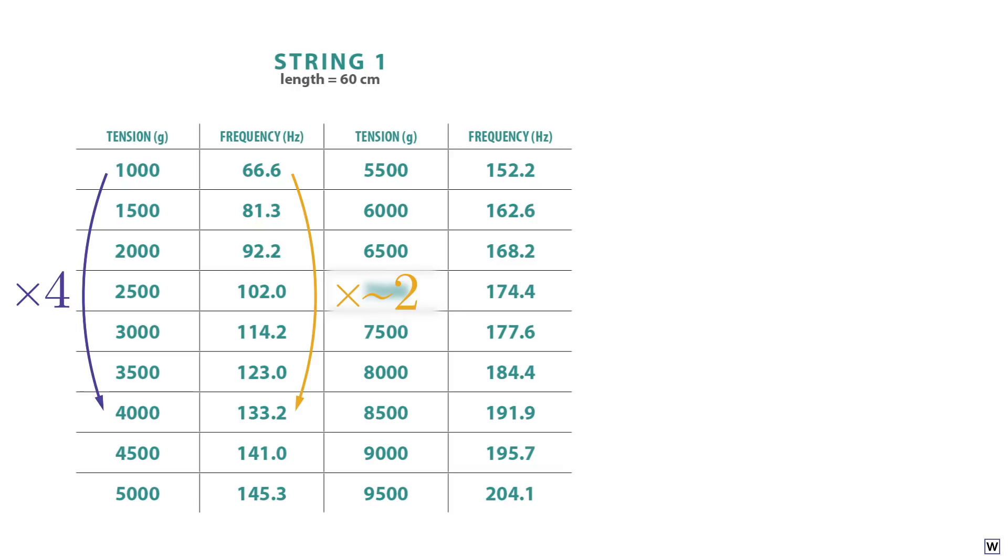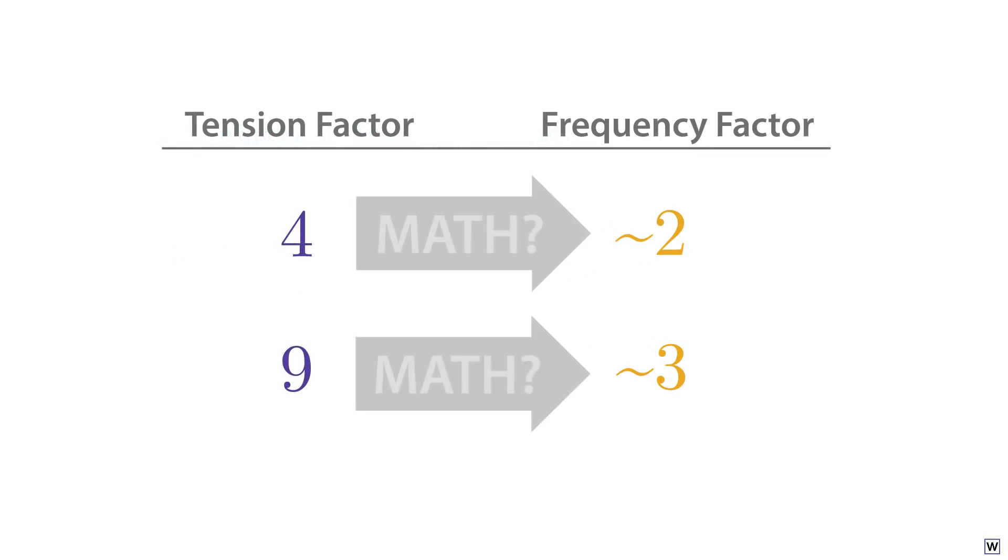Interesting. This could be a hint of a pattern. Let's continue our search by looking for examples of our frequency approximately tripling. Our frequency does roughly triple from 66.6 to 195.7 hertz. And notice that making this jump requires our tension to be increased by a factor of 9, from 1,000 to 9,000 grams. Now we're really getting somewhere. What mathematical relationship between tension and frequency would turn factors of 4 into 2 and factors of 9 into 3?